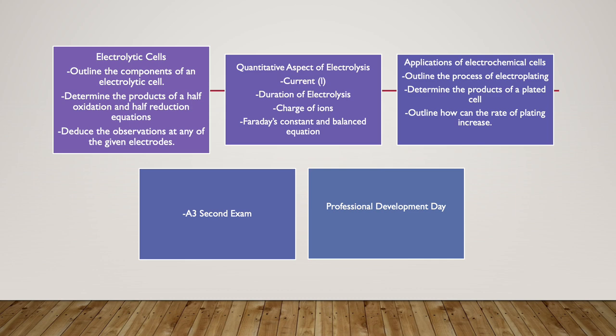On Monday we will be learning the quantitative aspect of electrolysis. We will go over the following key terms: current, duration of electrolysis, and charge of the ions, and learn how those three can quantitatively affect electrolysis. We will also go over Faraday's constant and how we balance an equation.